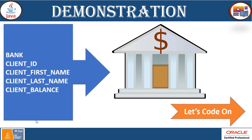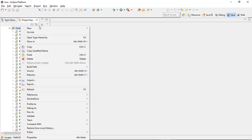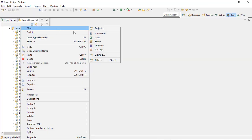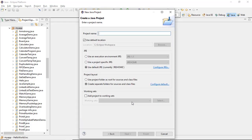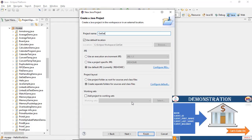Now let's look at the demonstration. We are going to have a bank application that has client ID, client first name, client last name, and client balance as private variables in the bank class. We will get and set the values from another class. Let's code. So let's create a Java project — this is your GetSetMethodDemo.